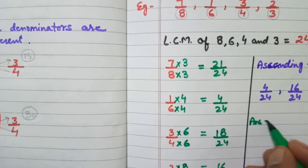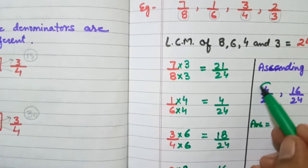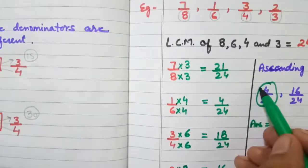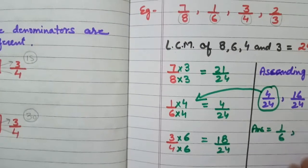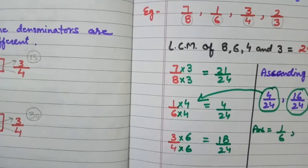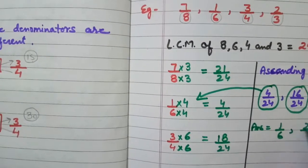We are going to write the answer. Final answer will be, from where we have got 4 upon 24. It is from 1 upon 6, so we will write 1 upon 6. And 16 upon 24 is from 2 by 3, so 2 by 3.